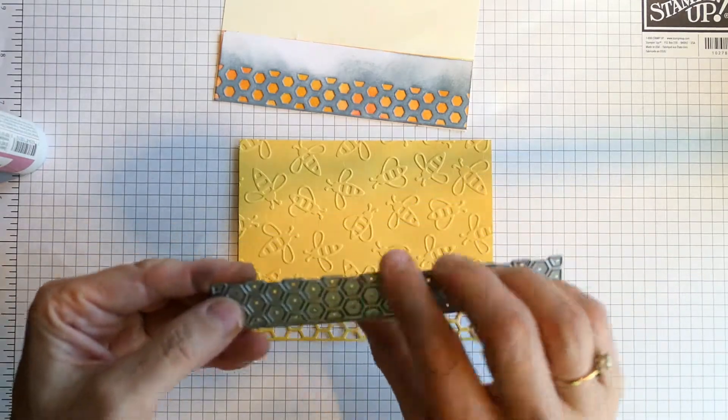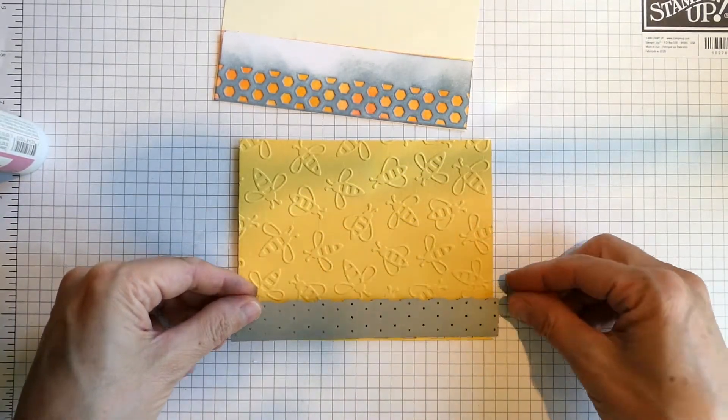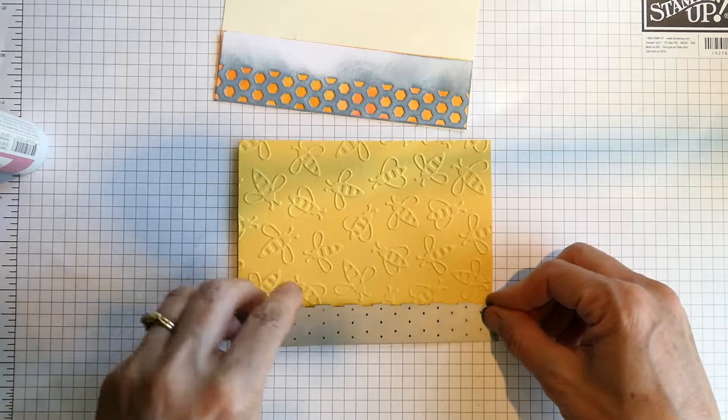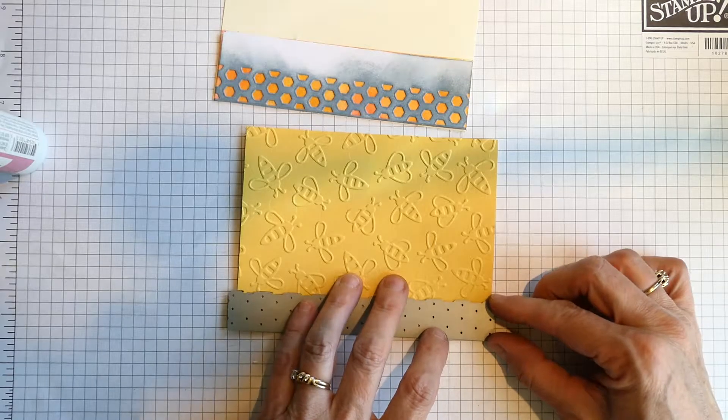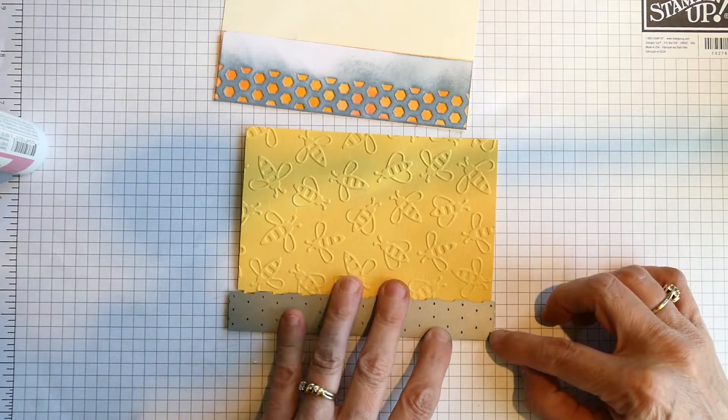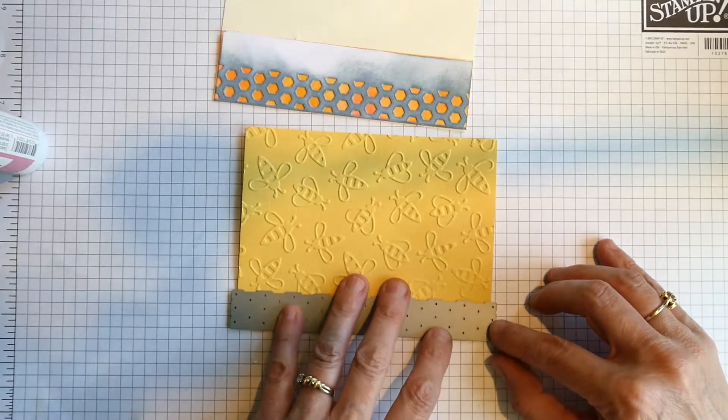Next I started off with a gold piece that was four and a quarter by five and a half inches wide. Using the large hexagon layers, I went along the bottom like I did on the middle layer, and I centered it on each of those die cuts so that they would line up.